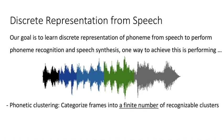One way to achieve this is performing the following two steps. First, for each audio frame, we categorize it into a finite number of recognizable clusters according to how it sounds. We use different colors here to represent different clusters. Here, each cluster represents a phoneme and we call this phonetic clustering.